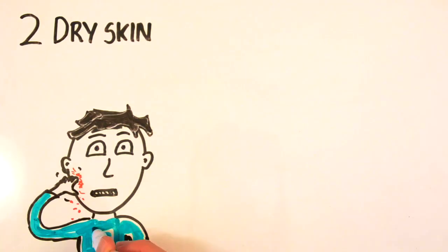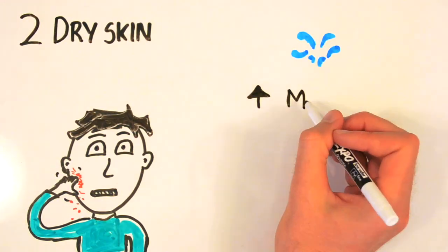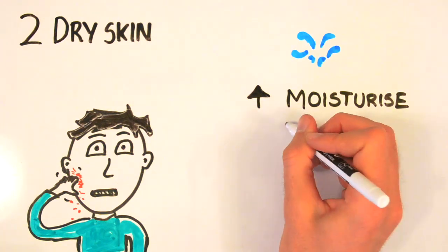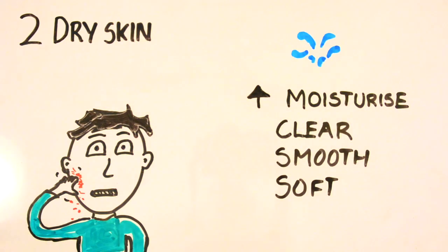The next sign of dehydration that you may experience is dry, flaky and even itchy skin. Skin, like other organs, needs plenty of water to function so that it can expel waste through sweat. Furthermore water helps to moisturize your skin, keeping it clear, smooth and soft, while helping to reduce wrinkles and acne.